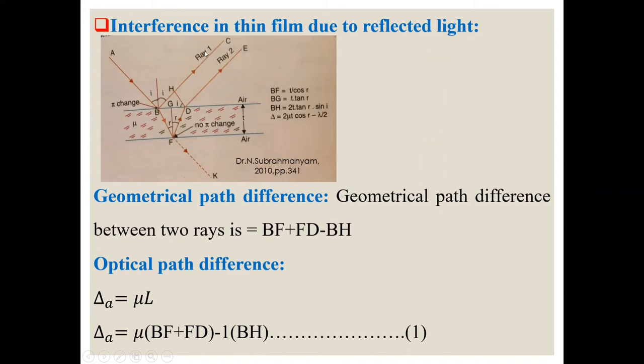So they are reflected rays derived from AB, the same ray. So then they are coherent. So they will produce interference pattern. So we will see it.